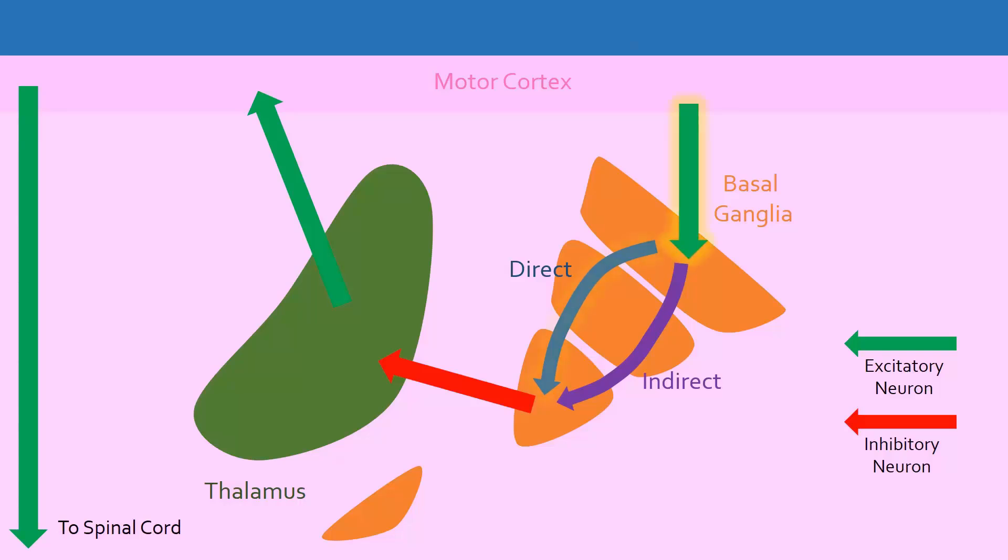If the direct pathway is activated, the inhibitory neurons connecting the basal ganglia and the thalamus are inactivated, and movement occurs. If the indirect pathway is activated, the inhibitory neurons are activated, and movement is prevented.